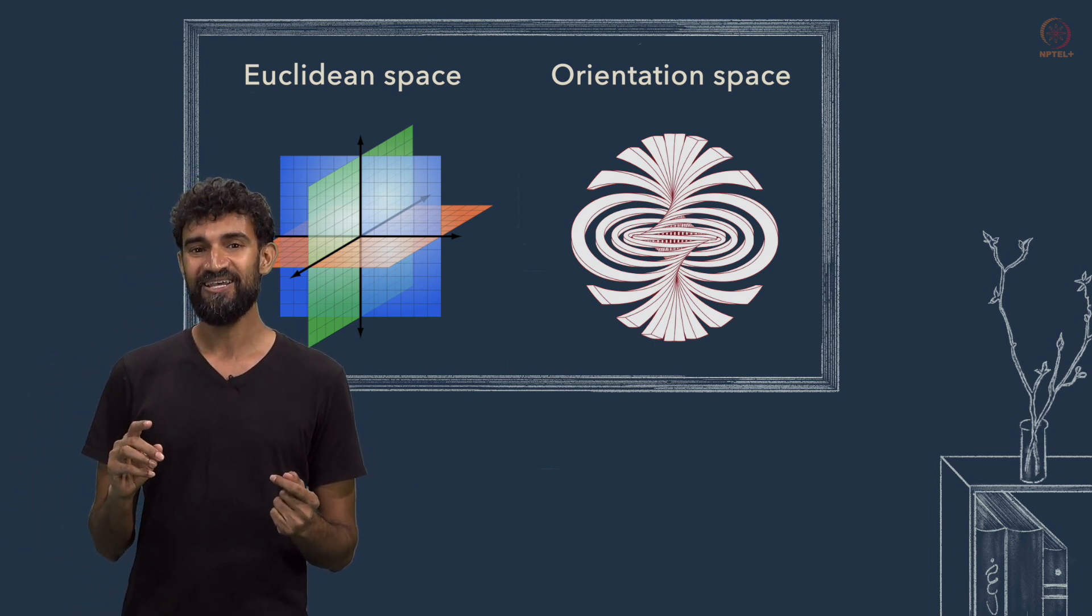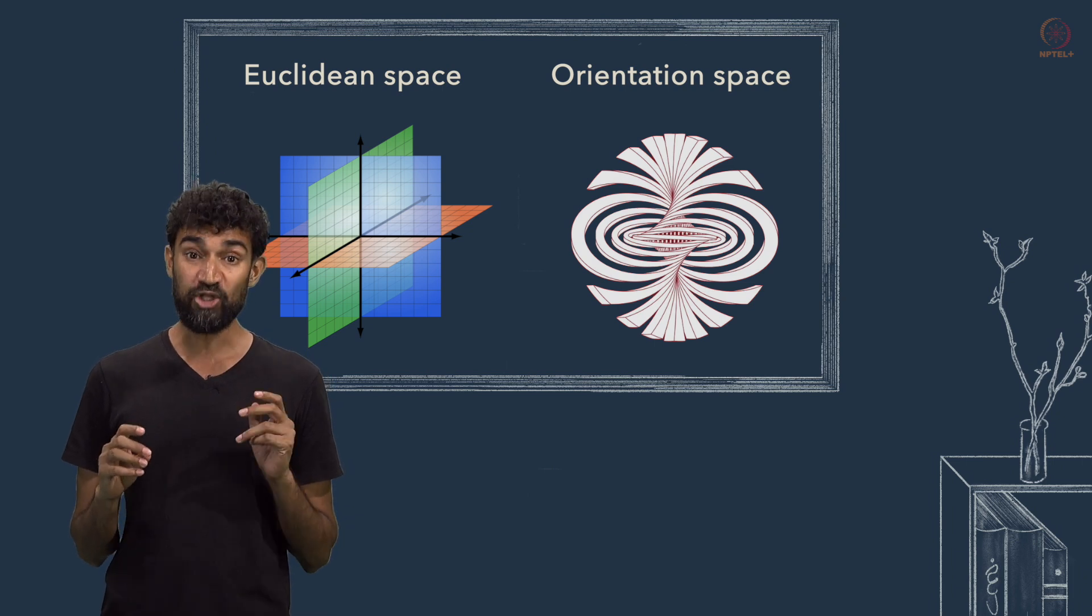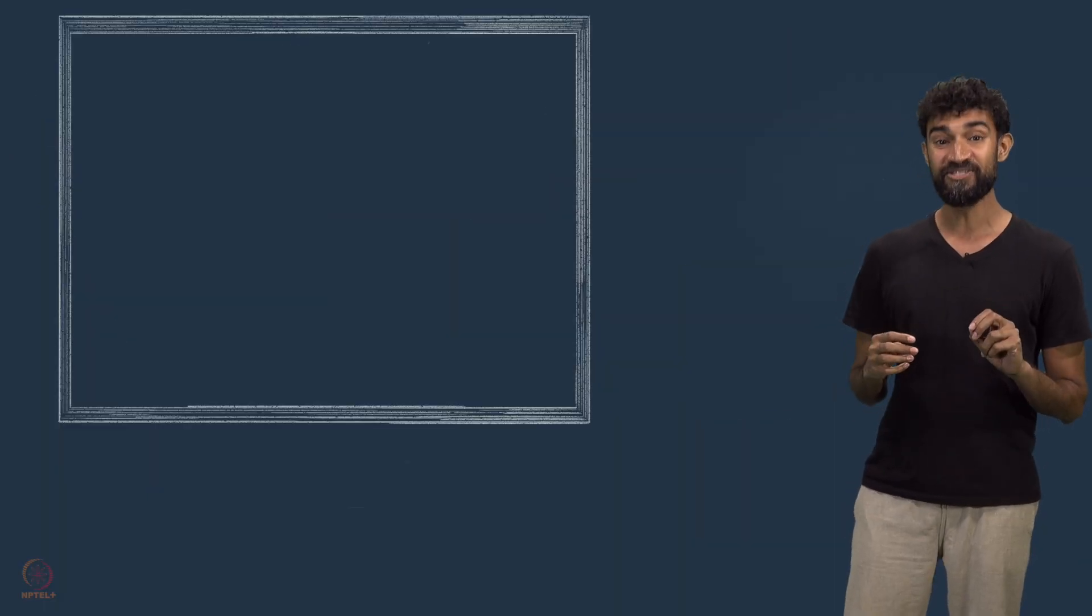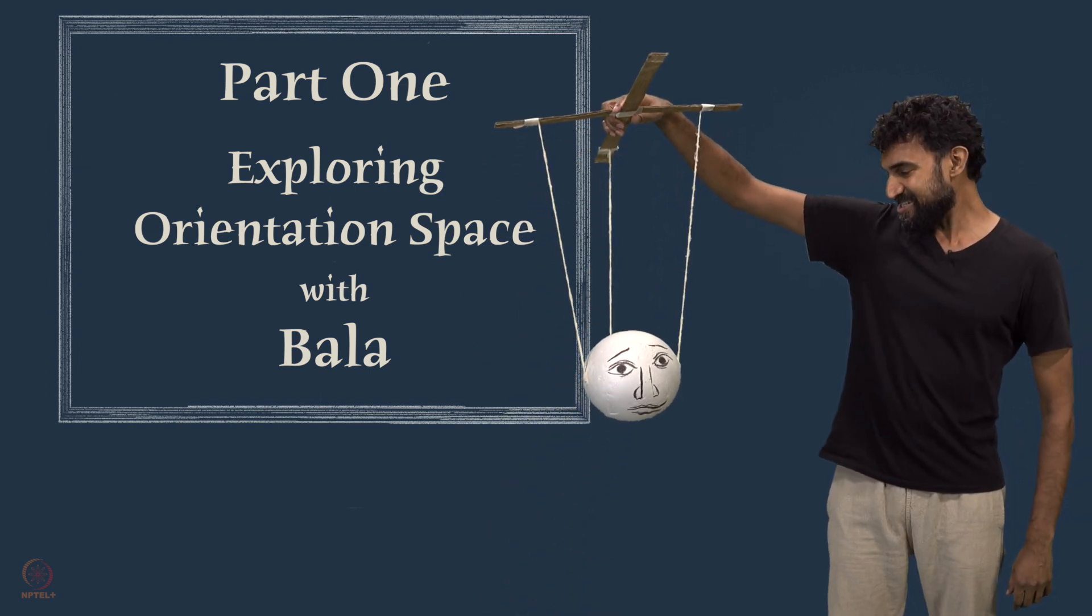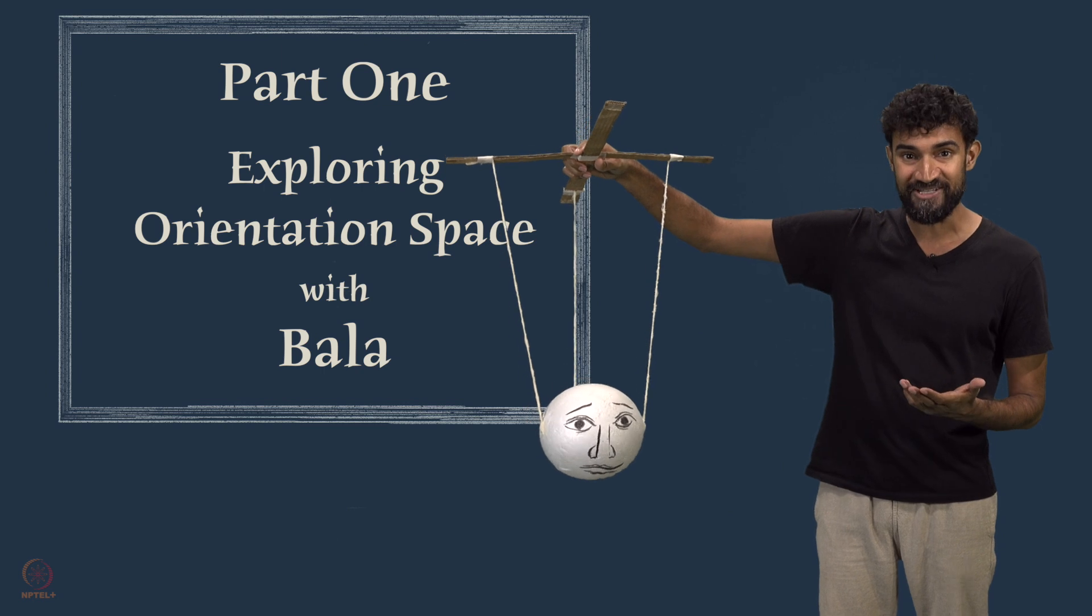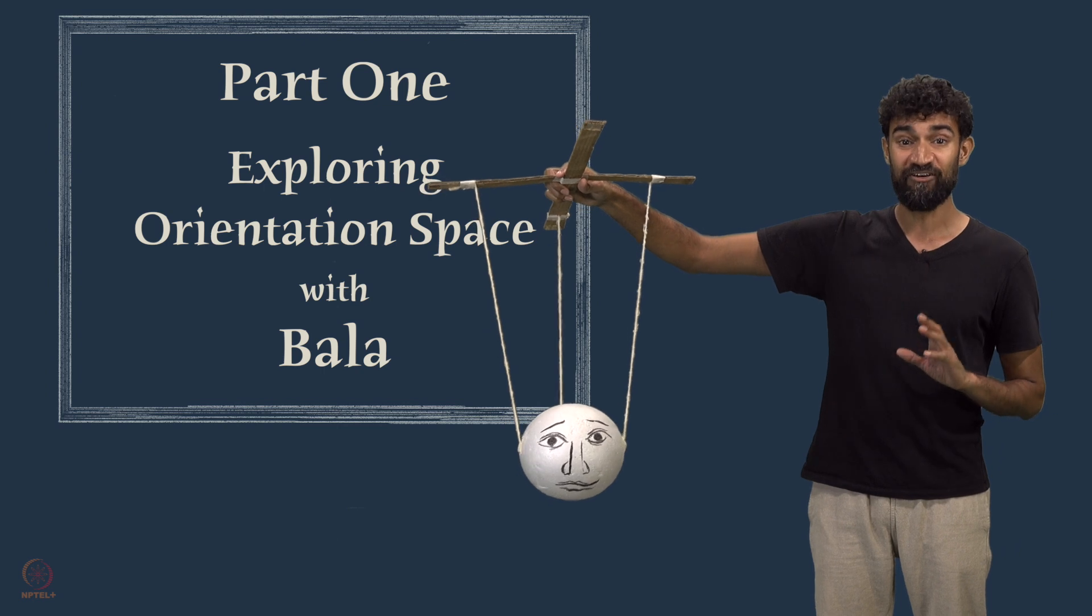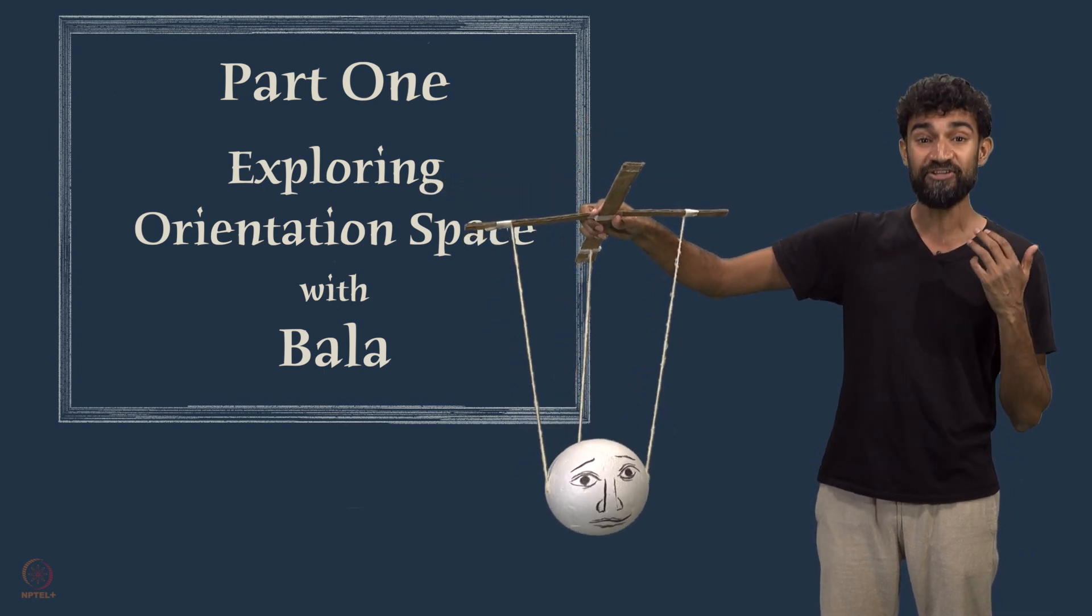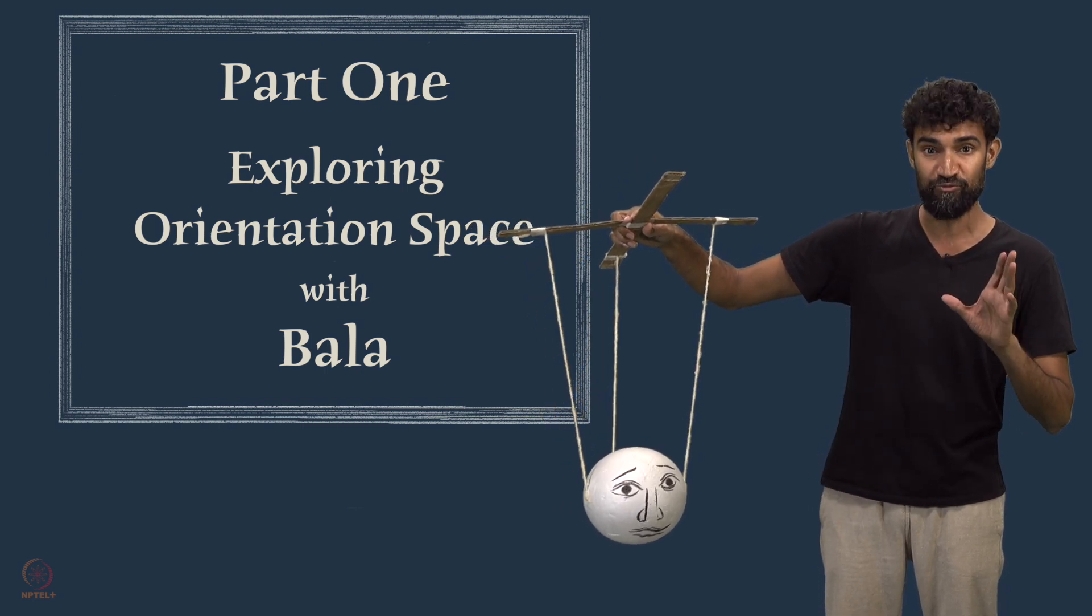In fact, you don't need to know any topology to begin exploring it, as long as you're willing to move your body. In case that sounds intimidating, there's someone who can help. This is Bala, one of the simplest and nicest puppets you'll ever meet. With Bala's help, we'll solve a series of movement puzzles, which will lead us to a deeper understanding of the shape of space, and the hidden topology that governs our movement within it.